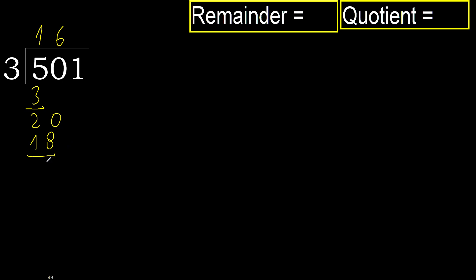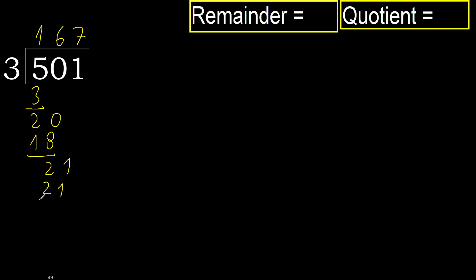Subtract, next — 21. 3 multiply by 7 is 21, which is not greater. Ok. Subtract, next.